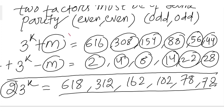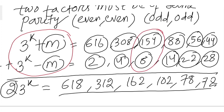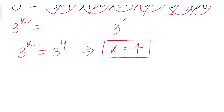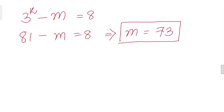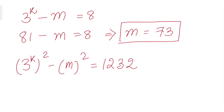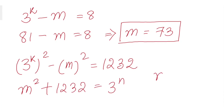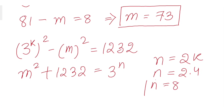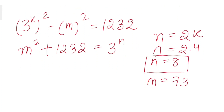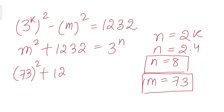With k = 4, we use the factor pair (44, 28): (3^k + m) = 44 + 28 ... Specifically, 3^k − m = 8 and 3^k + m = ... From these two equations we solve for m. Using our original equation m squared plus 1232 equals 3 to the power n, with n = 2k = 2 times 4 = 8, we get n = 8.